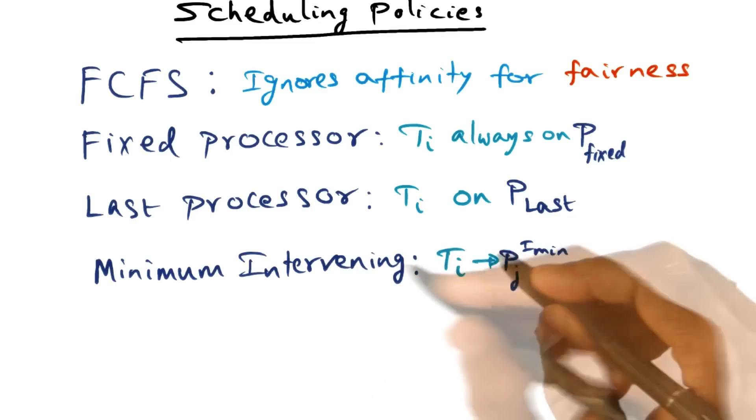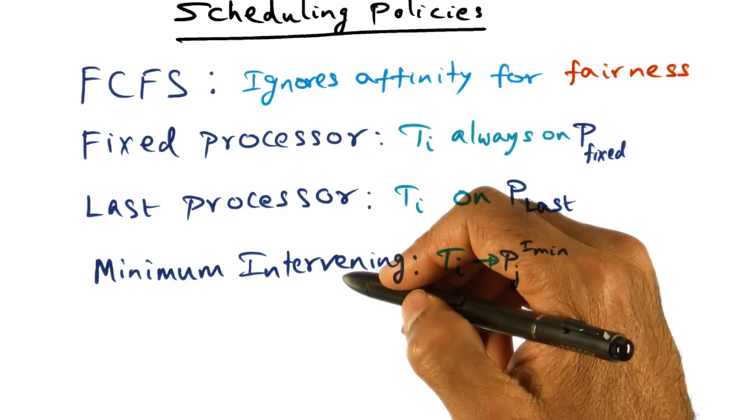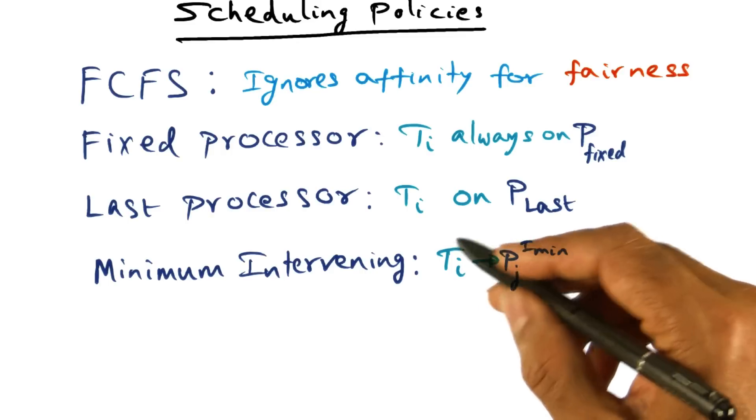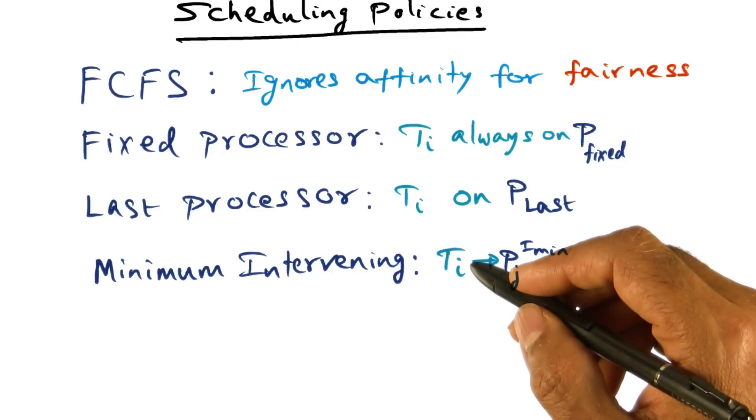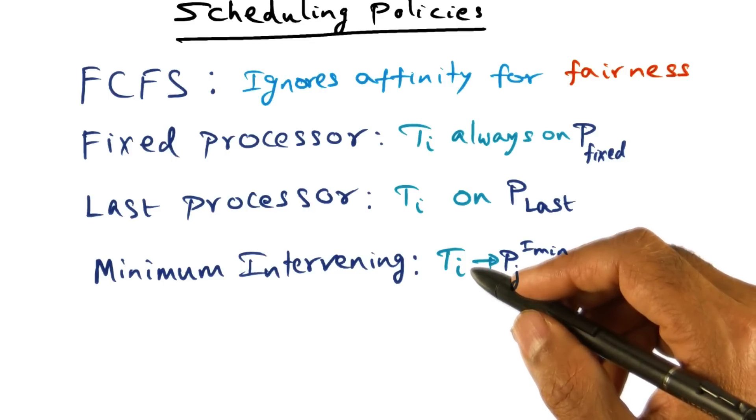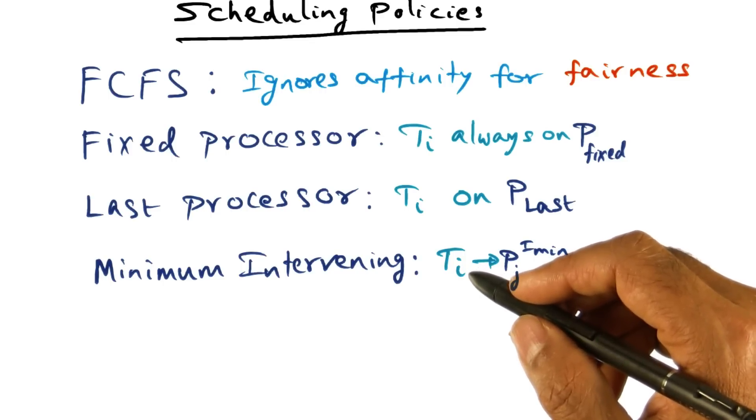And therefore, there's a variant of minimum intervening, which is called limited minimum intervening, which is saying don't keep this affinity index for all the processors, just keep it for the top few processors. So the affinity index, if it is 2 or 3, those are the ones that I care about.